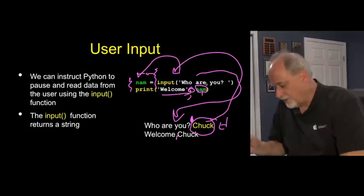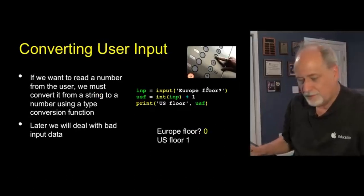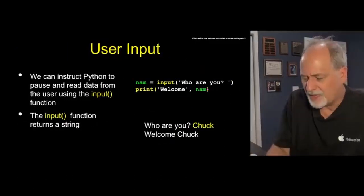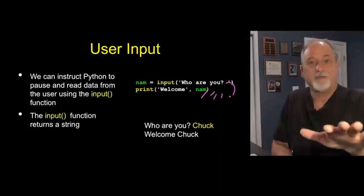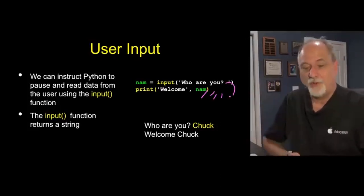This comma here actually does put the space in here automatically. So it says welcome space chuck. So print can take more than one thing separated by commas. Matter of fact, print can have a whole bunch, parentheses, as many as you like. Everything you've seen up to now is kind of one thing in the print. But that doesn't mean the print only can do one thing.